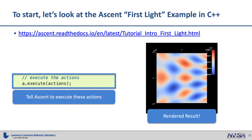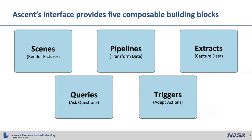Ascent's interface is divided into composable building blocks. Today we'll focus on scenes and pipelines based on time constraints. There are also ways to get data out—cinema extracts are one example. And there are several examples for doing queries, which are ways of asking quantitative questions like summations, as well as triggers—so that when something interesting happens, you can render a picture. Today we'll focus up to pipelines.